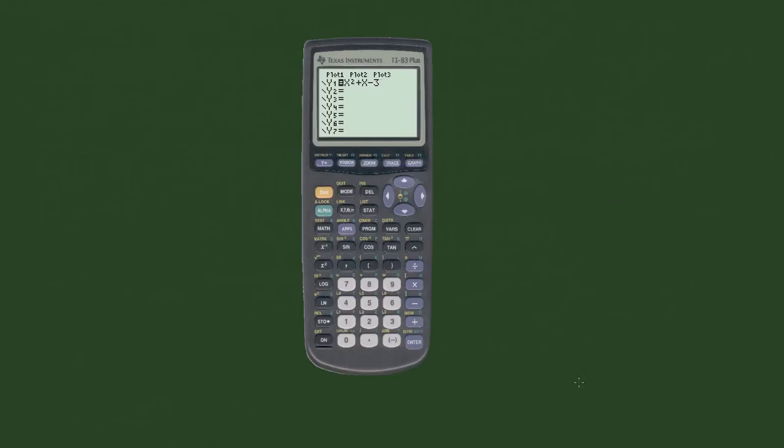So for this case, we have just a simple quadratic equation here. We have x squared plus x minus 3. And so what we're going to do is obviously plug this in and graph this. So we're going to graph this. And so this is the graph of that equation.